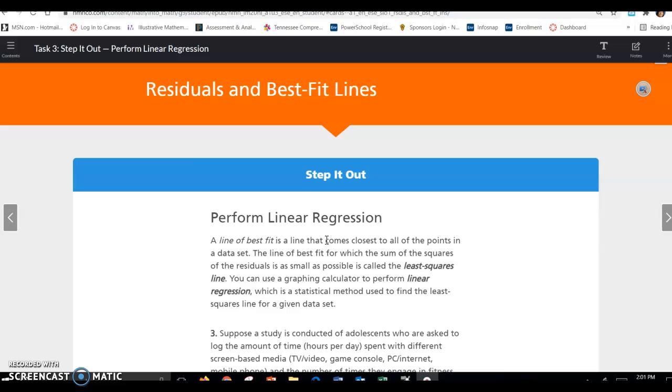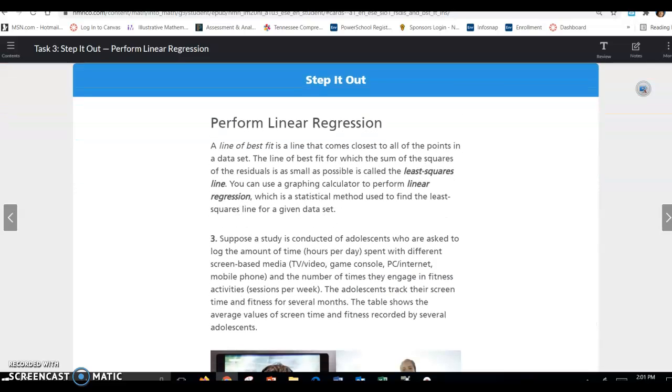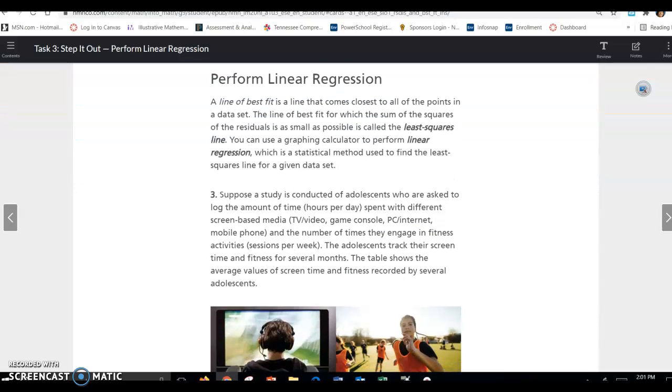So residuals and best fit lines. To perform linear regression, a line of best fit is a line that comes closest to all the points in the data set. The line of best fit for which the sum of the squares of the residuals is as small as possible is called the least squares line. You can use a graphing calculator to perform a line of regression, which is a statistical method used to find the least squares line for a given data set.